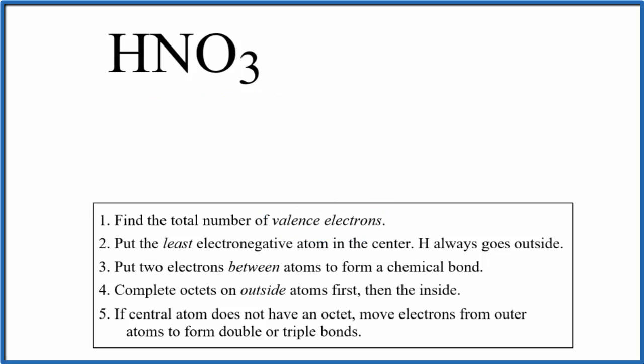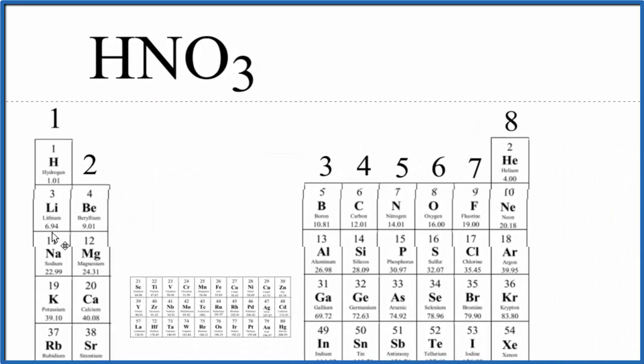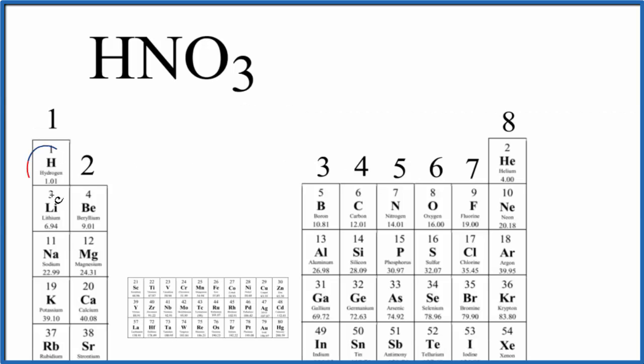First we count the valence electrons. We look at the periodic table. Hydrogen in group one has one valence electron. Nitrogen in group 15, sometimes called 5A, has five valence electrons.